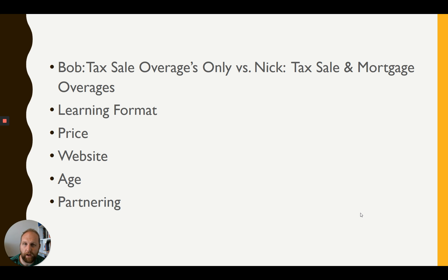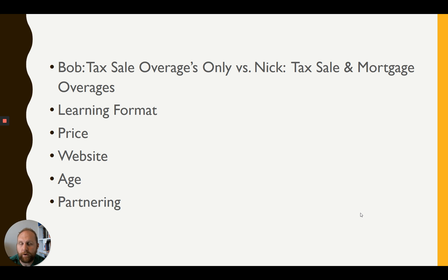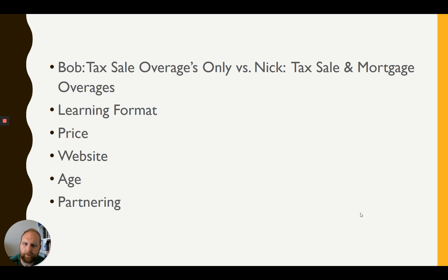So I cover both tax and mortgage overages; Bob's only covers tax overages. Why does that matter? There are about 14 states where tax sale overages simply don't exist because of how the tax sales are set up. Mortgage overages allow you to work in more states. If you only know how to do tax sale overages, you're limited in the area you can work.